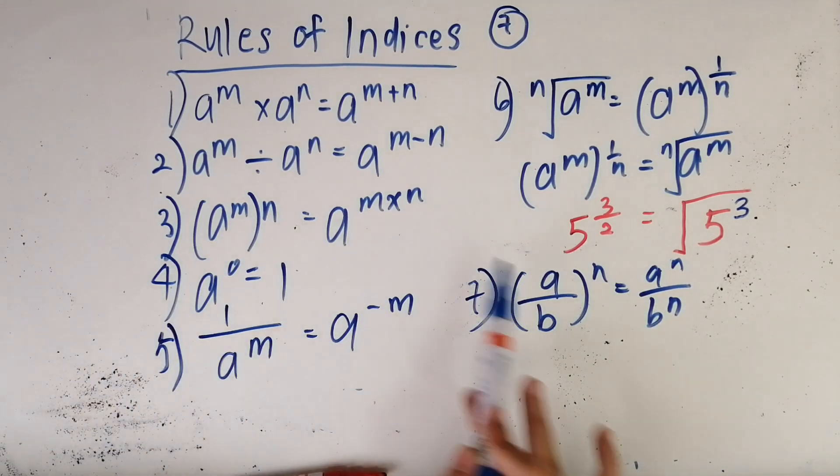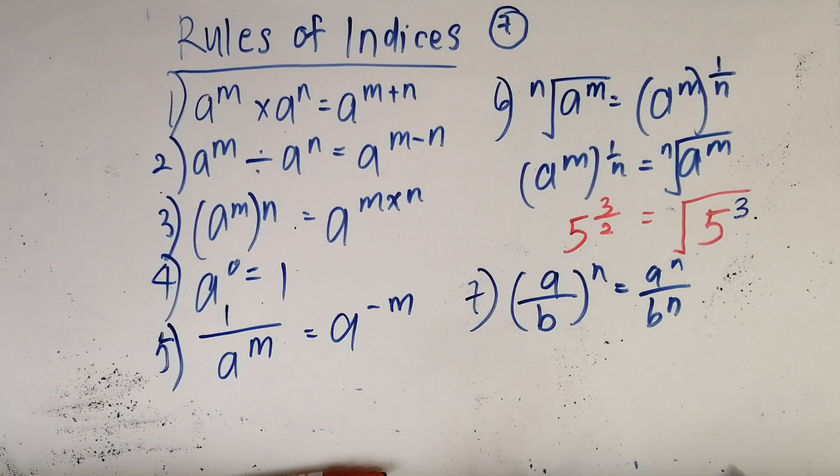So these are the seven rules of indices. When it comes to answering questions about indices, without a doubt you would need these seven rules. What I suggest you to do is to get a sticky note and write down this rule of indices, maybe paste it around your study area where you can see it often.